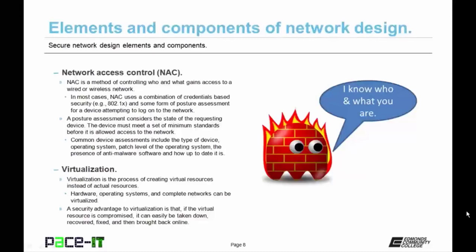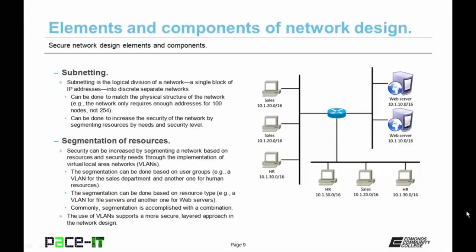Then we have virtualization—the process of creating virtual resources instead of actual physical resources. Hardware, operating systems, and complete networks can be virtualized. A security advantage is that if a virtual resource is compromised, it can be easily taken down, recovered, fixed, and brought back online quickly, though figuring out how it was compromised and filling that security hole is recommended. Subnetting is the logical division of a network—a single block of IP addresses being divided into discrete separate networks. This can be done to match the physical structure of the network or to increase security by segmenting resources by need and security level.